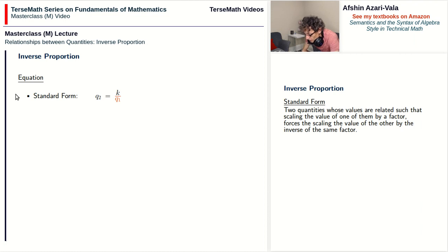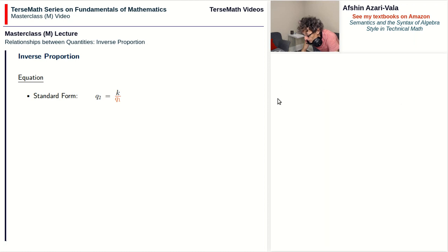To explain how this equation captures the meaning of inverse proportion problems, let's take a look at some examples. Let's say q2 equals 40 divided by q1. In this case k has the fixed value of 40.